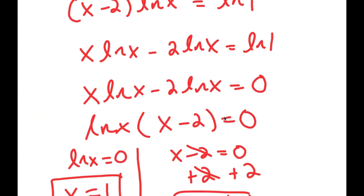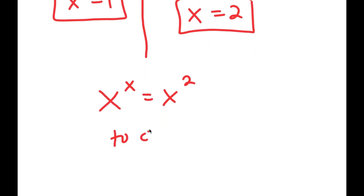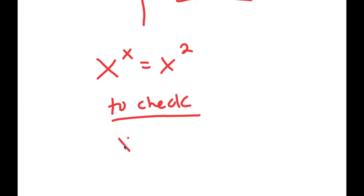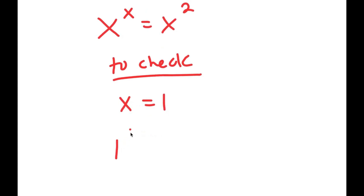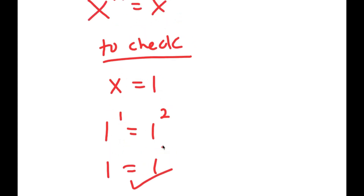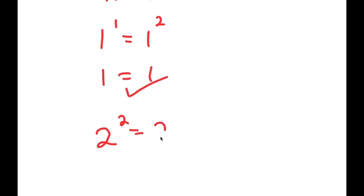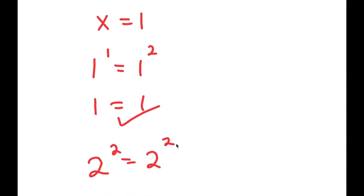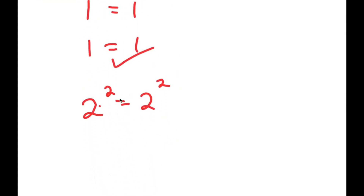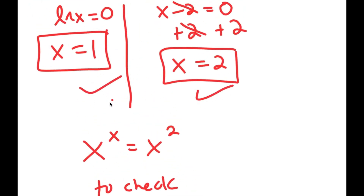Going back to the original equation x^x equals x^2, I'll verify both solutions. Plugging in x equals 1: 1 to the power of 1 is equal to 1 to the power of 2 — both equal 1, so this is correct. Plugging in x equals 2: 2 to the power of 2 is equal to 2 to the power of 2 — both equal 4, so this is correct as well. Both solutions check out.